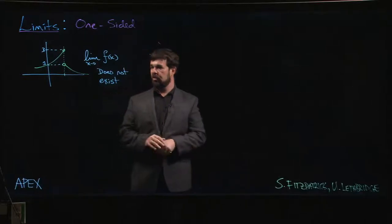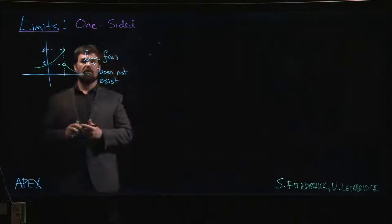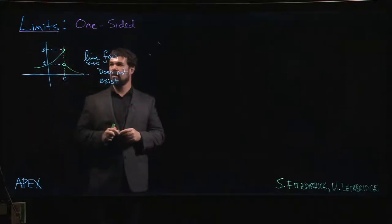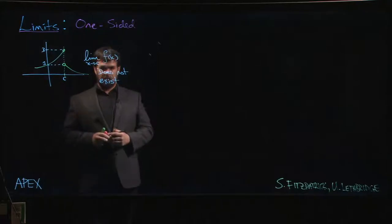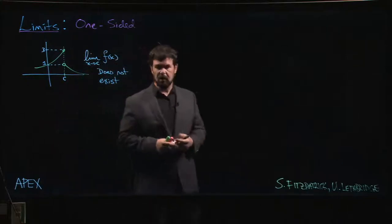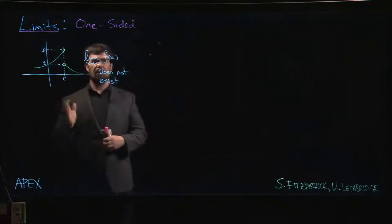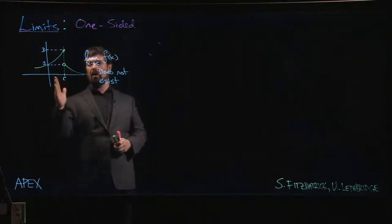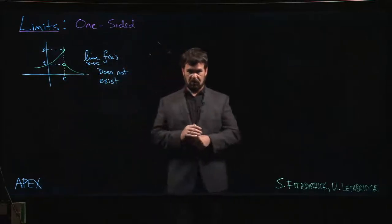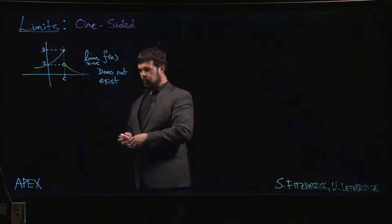Thinking back to the introduction to limits, we looked at different ways that a limit might fail to exist. One scenario we considered: if our function is approaching more than one value when we're close to point C, then the limit can't possibly exist. Typically this happens when the values that f(x) is close to on one side of the point are different from the values on the other side — though there are also wild situations like sine of 1/x. But this more typical example shows the limit doesn't exist.